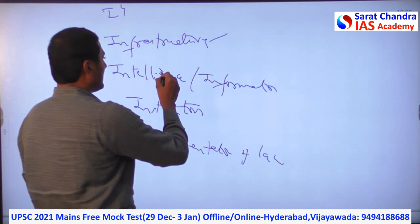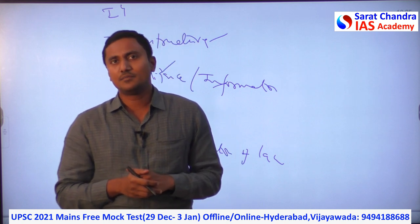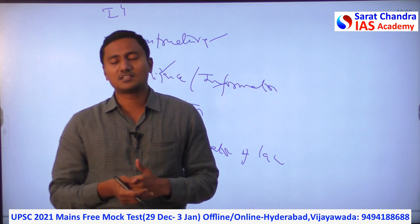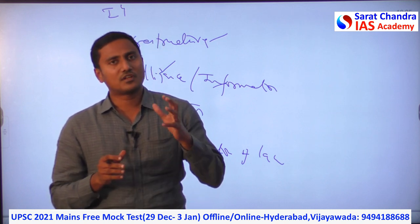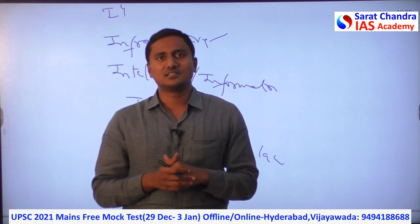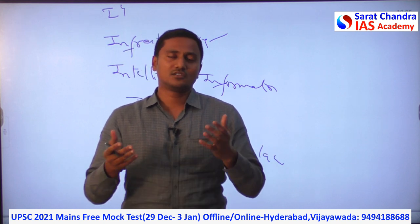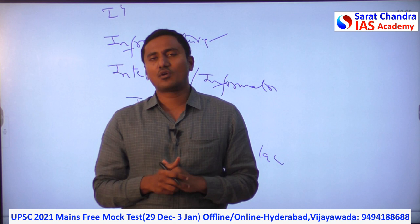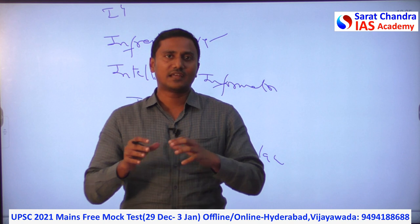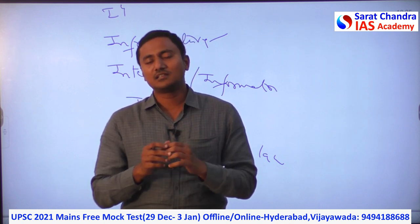Regarding intelligence, most security threats can be addressed if you have the right intelligence and right information. For example, in the 2008 26/11 attacks, we did not have intelligence that 10 terrorists were coming through the coastal border. Or the 2010 Dantewada attack, where 76 CRPF personnel were killed — they did not have information of the attack planned by the Maoists. So intelligence is very important.